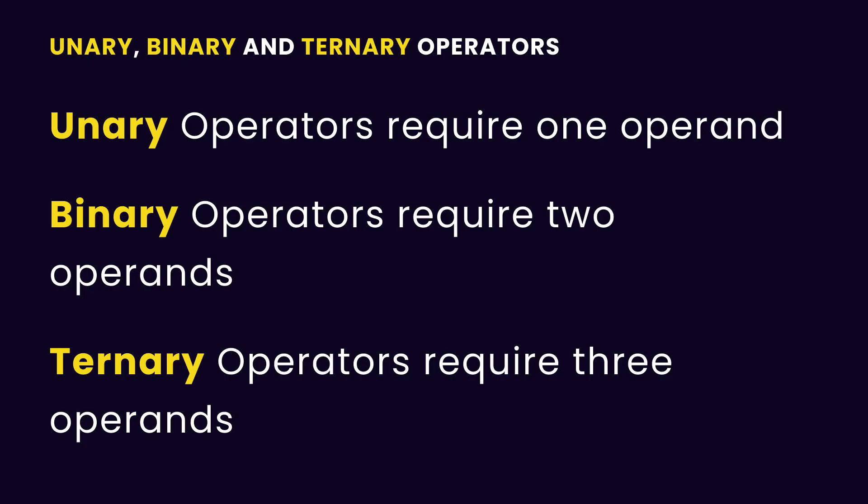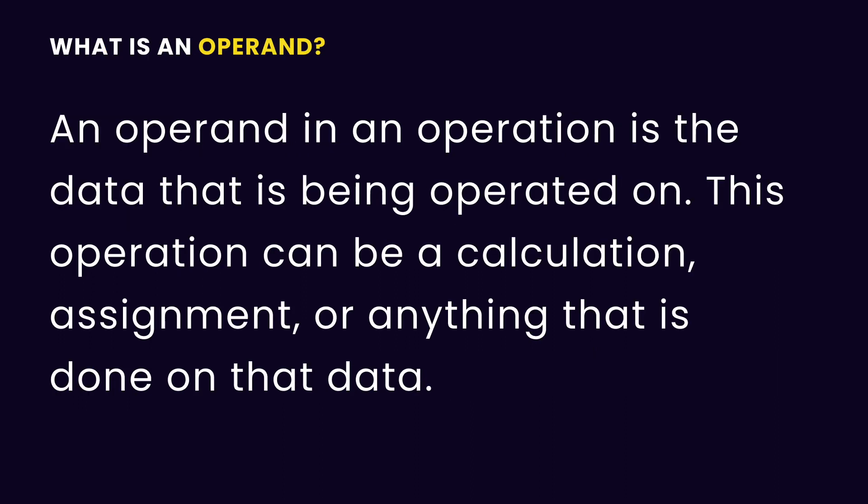The differences between these categories of operators is that unary operators require one operand, binary operators require two operands, and ternary operators require three operands. We'll look at examples that fall under each category, but first let's understand what an operand is.